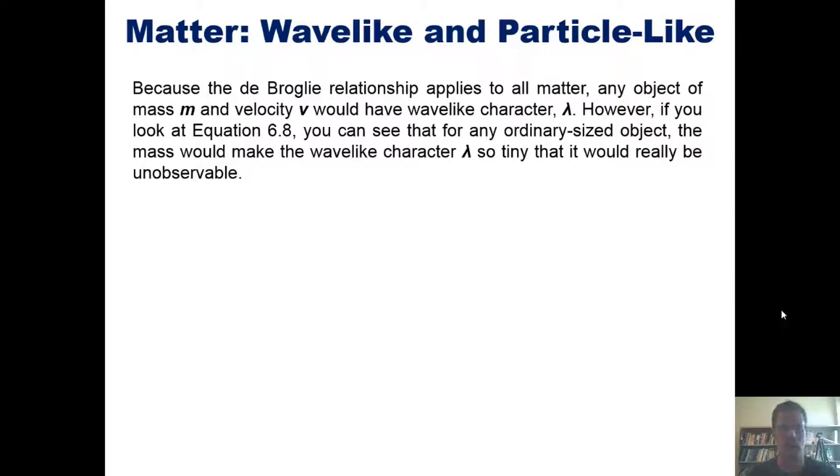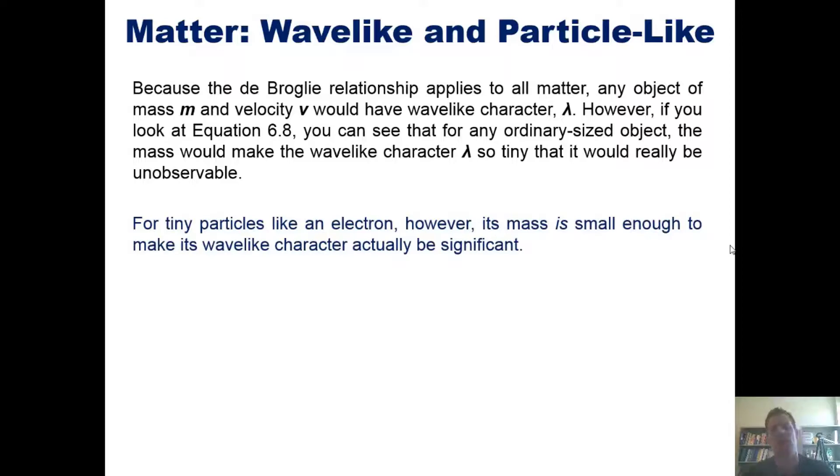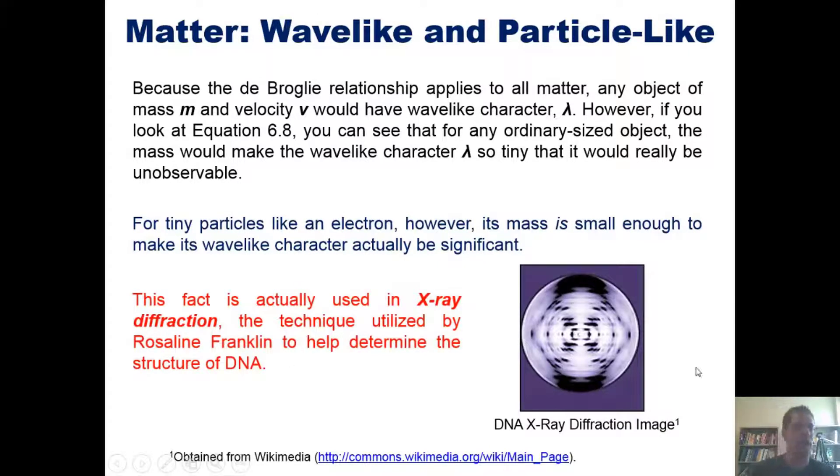Because the de Broglie relationship applies to all matter, any object of mass M and velocity V would actually have wave-like character. However, if you look at equation 6.8, you can see that for any ordinary-sized object, the mass would make the wave-like character lambda so tiny that it would really be almost unobservable. When we talk about something that you'd actually interact with in real life, like an apple or a golf ball or a car, you're not going to see its wave-like properties because its mass is just way too big. However, for tiny particles such as an electron, their mass is so small that their wave-like characteristics can actually be quite significant. This fact is actually used in x-ray diffraction, which is a technique utilized by Rosalind Franklin to help determine the structure of DNA.